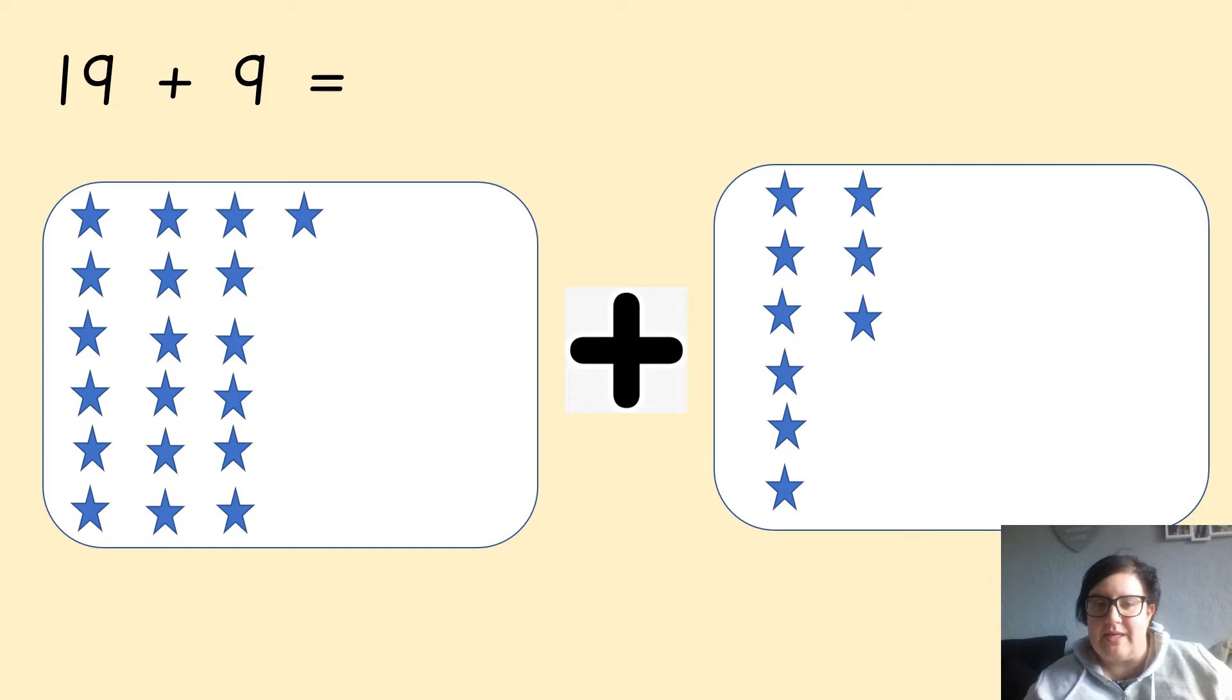So let's have a look at this problem. We've got here on the screen 19 add 9. So there are 19 stars in this box and if we count on, so 19, 20, 21, 22, 23, 24, 25, 26, 27, 28. Your answer would be 28.